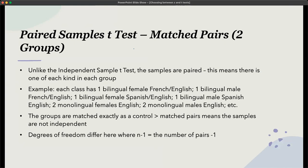So you're going to get a different degrees of freedom here, where the degrees of freedom in the independent samples t-test is the general number minus one. In the paired samples, it's the number of pairs minus one. So this is going to be slightly different.